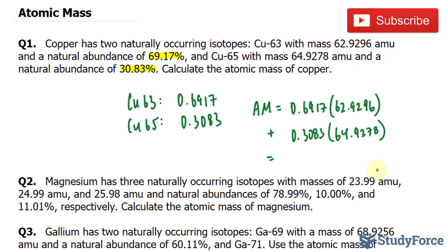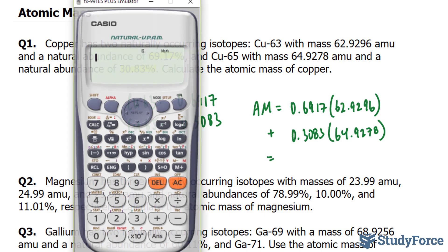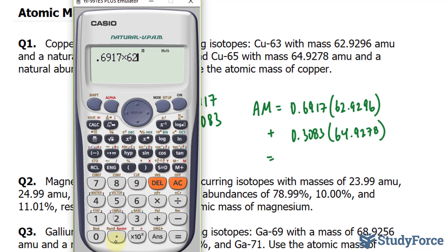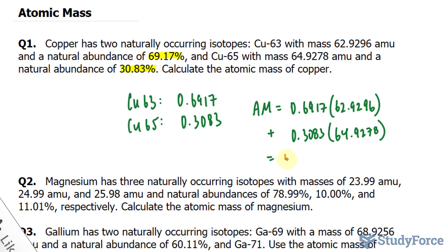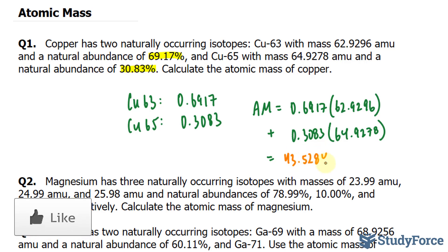But when we add, we have to keep in mind the number of decimal places. So let's do this one at a time. 0.6917 multiplied by 62.9296 gives us 43.5284. We have to stop at four decimal places, so everything after the two is insignificant. But we'll continue to write these numbers down so we don't lose precision when we add. So I have 43.5284, and I'll put a dot underneath the number that signifies the significant figures.